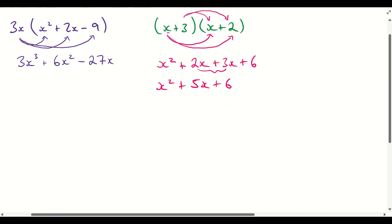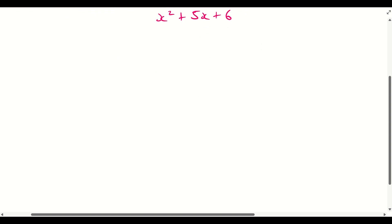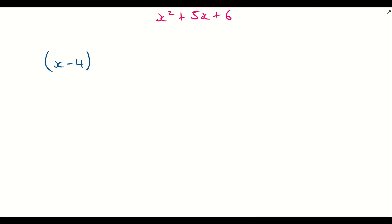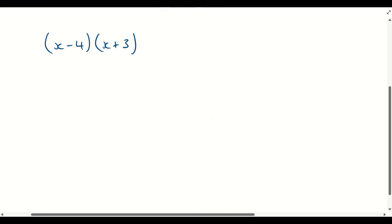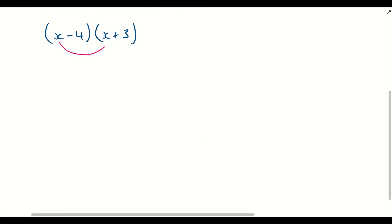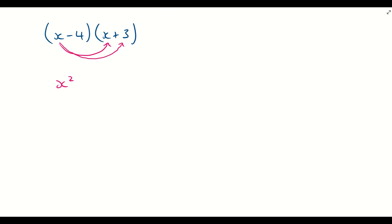Let's do another example to make this click. This time we've got (x − 4)(x + 3), so we're introducing a negative. The same principle applies — nothing gets any scarier. We do x times x, giving us x², and then x times 3 — creating our crab claws underneath — giving us plus 3x.